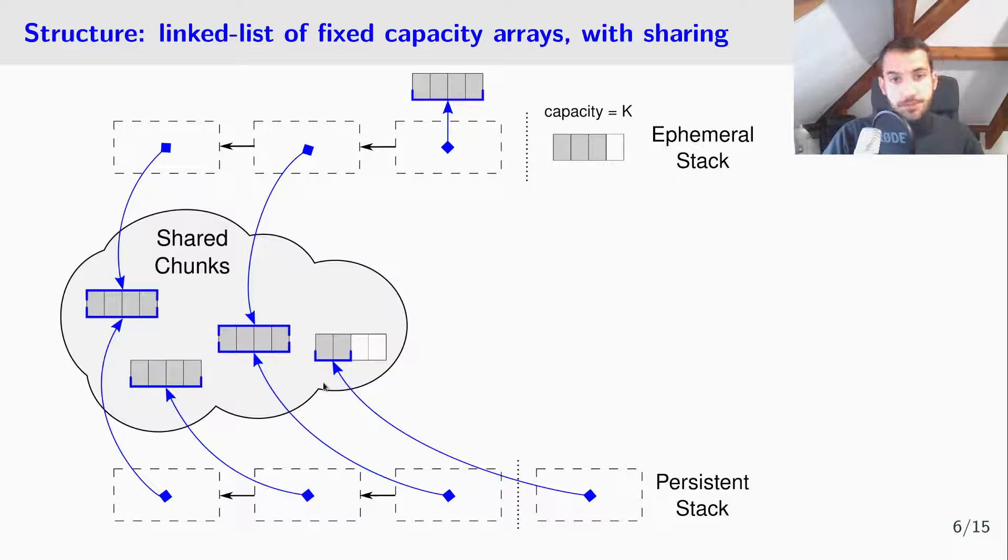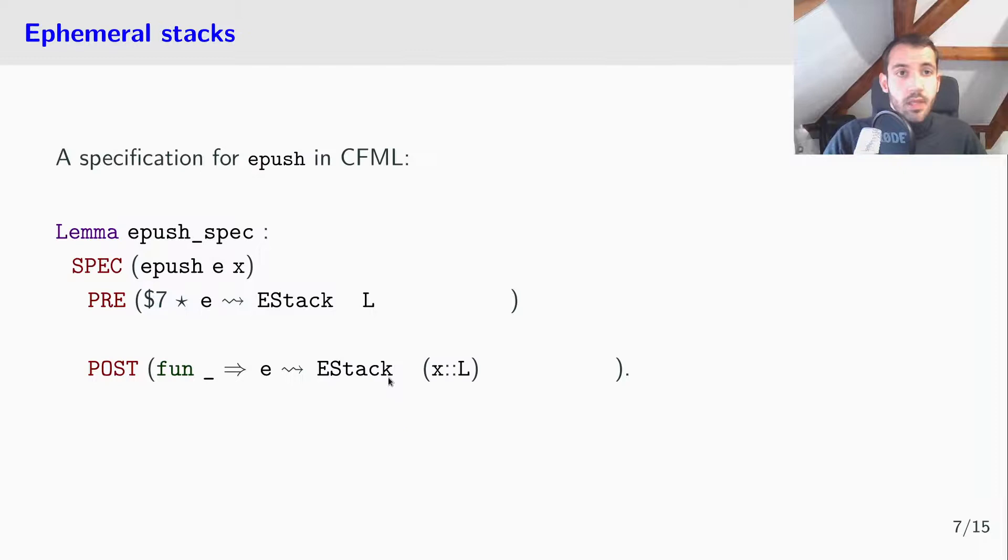But now, let me show you some specifications for these operations. First of all, a specification for ephemeral push in CFML. Here is a simplified specification in a purely ephemeral world. This is standard. If I want to push x in e, and I know that e represents a stack of model l, then ePush will modify e to represent a stack of model x cons with l. Notice that in the precondition we require seven time credits, so a constant number of time credits, so ePush is specified as a constant time operation.